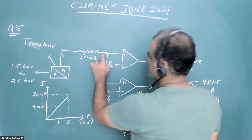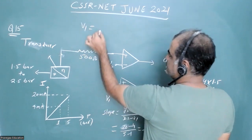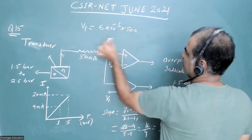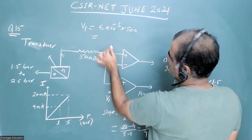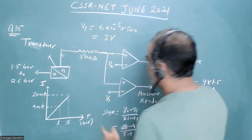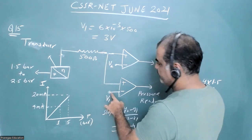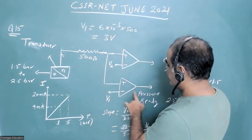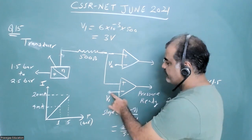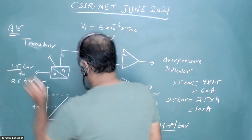When we are getting 6 milliampere current, the voltage at this point will be 6 milliampere × 500 ohms, which gives 3 volts. So when the voltage here reaches 3 volts, it shows that the pressure is at 1.5 bar and our experiment is ready.